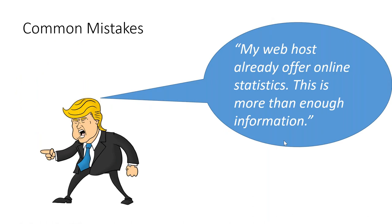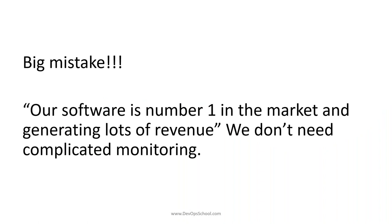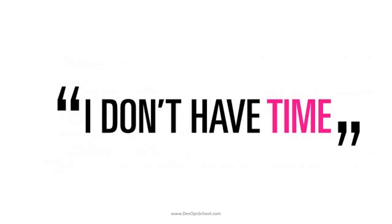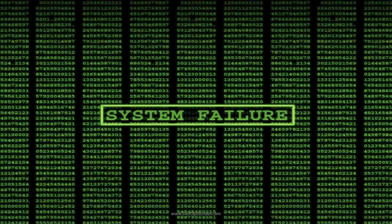Some of the common mistakes we make: we say our web hosts provide sufficient metrics like AWS, so we don't need more monitoring solutions. Another big mistake is saying our software is generating great revenue and we don't need complicated monitoring. Then suddenly the system fails. Before failure everything was good — web stats, application, everything running fine — but suddenly there's a problem you don't know about.